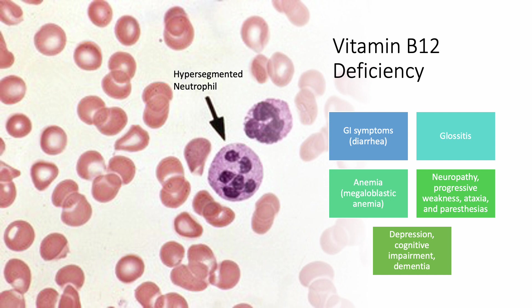Vitamin B12 is a very important cause of many types of neurological problems. It can cause peripheral neuropathy — numbness, pain, and tingling that is symmetrical in the lower and upper extremities — progressive weakness, and ataxia, which is an unsteady gait that can even progress to spasticity with spasm and paralysis. It can also cause depression, cognitive impairment, and even dementia. Every time a neurologist sees a patient with these conditions, they always order a B12 level.